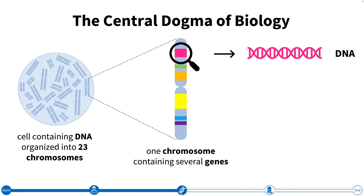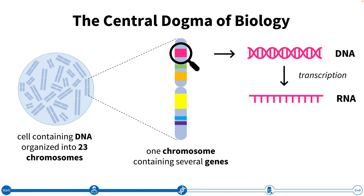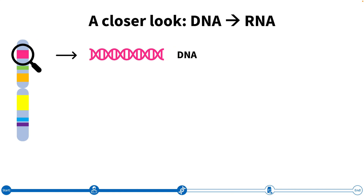We start with DNA. Then in step one, called transcription, DNA is transcribed into RNA. Unlike DNA, which is made up of two strands, RNA has only one strand. This single strand can then go through a process called translation to produce the protein that is encoded by the gene. To understand how changes to the DNA lead to Duchenne, we need to take a closer look at transcription — the process of getting from DNA to RNA.